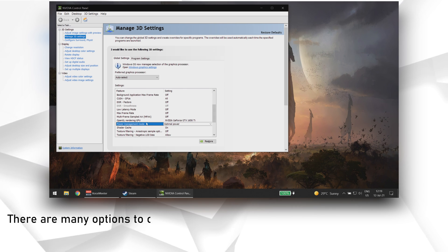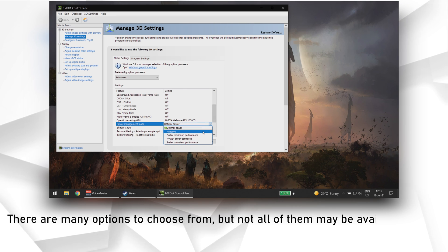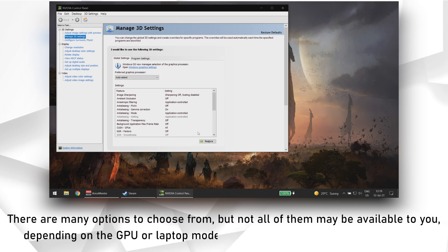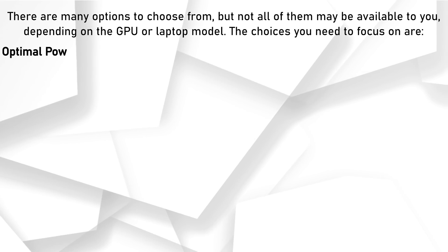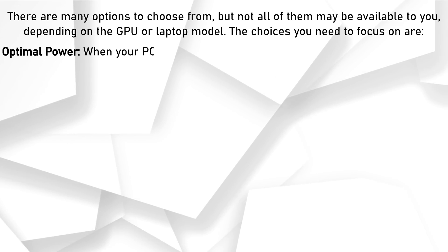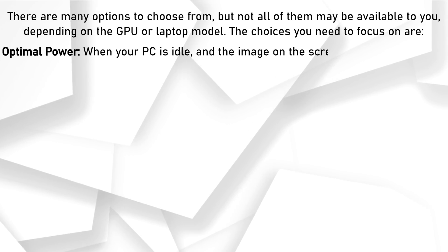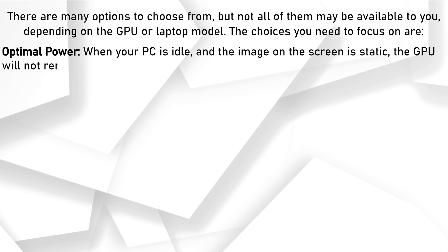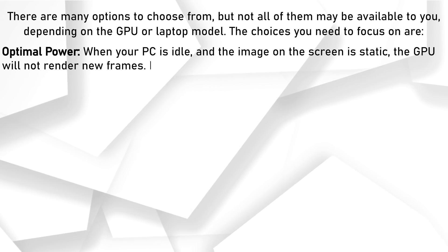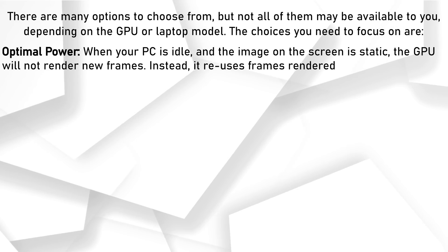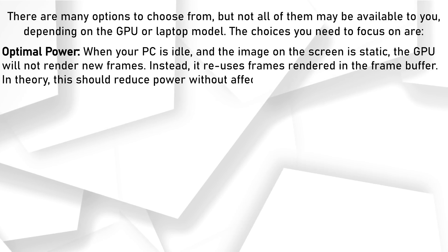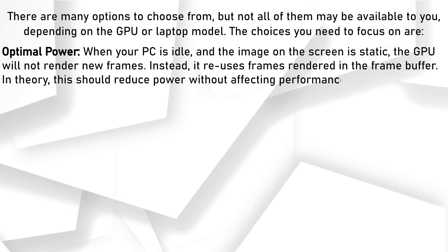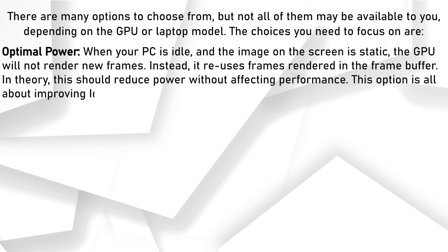There are many options to choose from, but not all of them may be available to you, depending on the GPU or laptop model. The choices you need to focus on are: Optimal Power — when your PC is idle and the image on the screen is static, the GPU will not render new frames. Instead, it reuses frames rendered in the frame buffer. In theory, this should reduce power without affecting performance. This option is all about improving idle power.